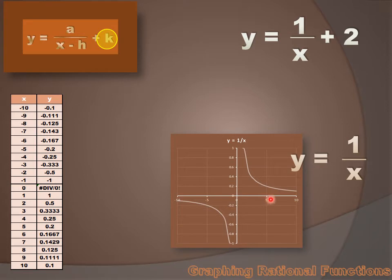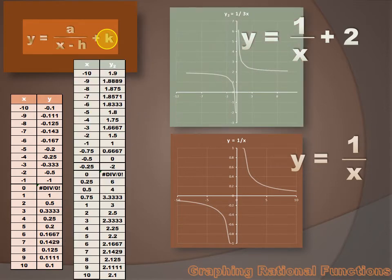Well, it's pretty obvious. Every y value would be 2 units greater than it was in the parent function. In the parent function, when x equaled 5, y equaled 0.2. But in this new function, when x equals 5, y is going to be 2.2. That's going to happen with every y value — every y value is going to be 2 greater than it was in the parent function. That whole curve is going to be raised by 2 units.